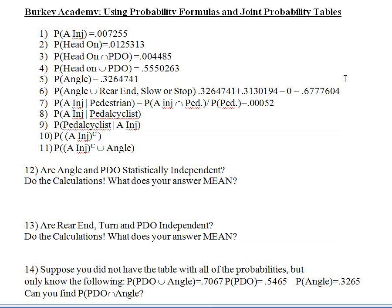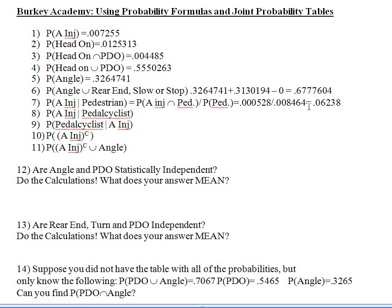Filling in those probabilities: A injury and pedestrian is 0.000528 divided by 0.000464. Pause the video and calculate it. We get about a 6% chance. Given we know that a car hit a pedestrian, there's about a 6% chance that someone involved — most likely the person walking rather than someone in the vehicle — suffers a severe disabling injury. That kind of makes sense.